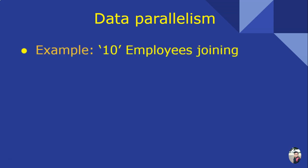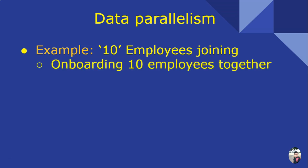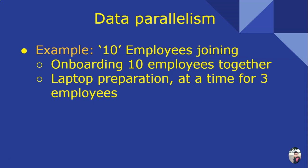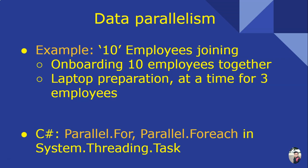Now let us see what is data parallelism. Similar to the task parallelism employee joining example, say 10 employees are joining — onboarding can happen simultaneously for 10 employees. The IT department has three engineers who can parallelly prepare laptops for three employees, so at a time three employees' laptops can be prepared. This is data parallelism.